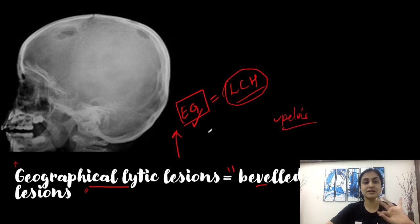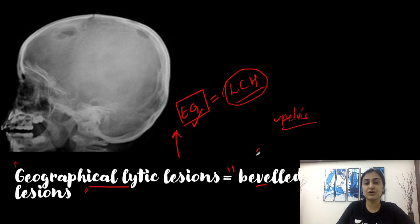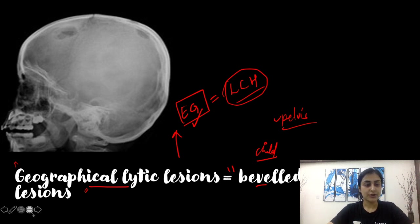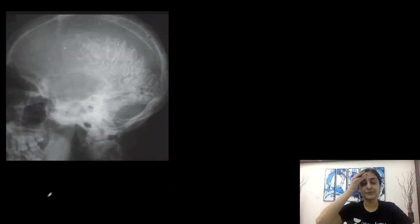These multifocal lytic lesions can be seen in multiple sites including the pelvic bone. If multiple systems are involved it is LCH; if it is solitary involvement, we call it eosinophilic granuloma. A typical history of a child will be given, as this most commonly presents in children.